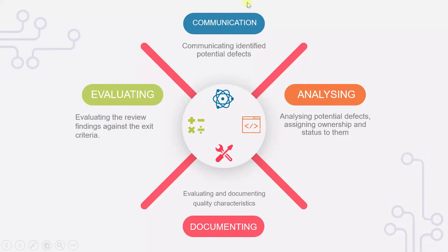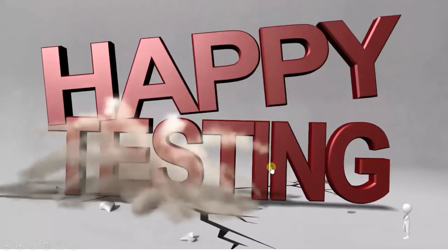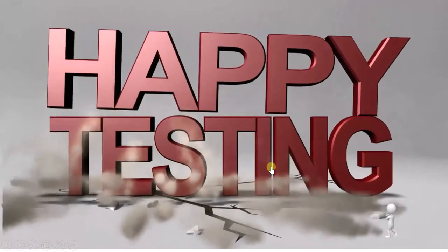To summarize: you have to communicate the defect, analyze the defect, document with respect to quality characteristics, and then decide whether you can exit the review process or whether the document has to be reviewed again. These are the things discussed during the review meeting. That is it from this slide — happy testing.